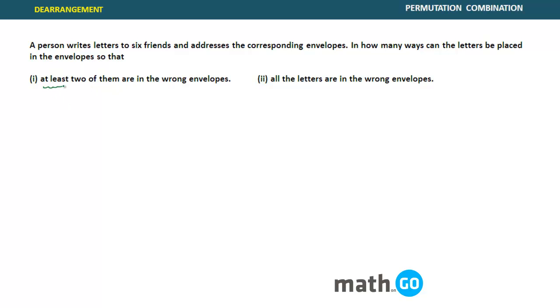So that at least two of them are in the wrong envelope. So what we did earlier was total de-arrangement. So for total de-arrangement was when everything went in the wrong place. Now they are asking very specific at least two.